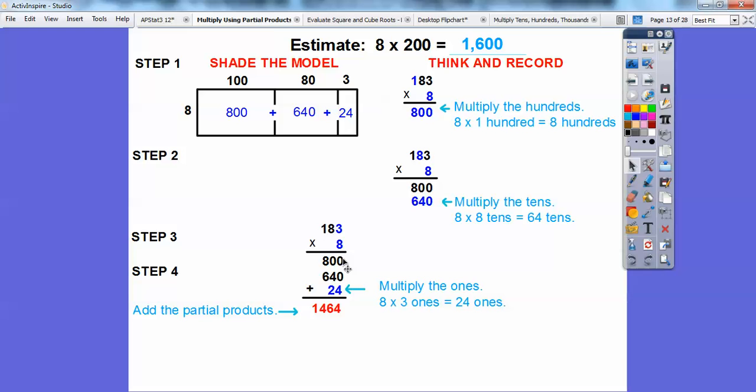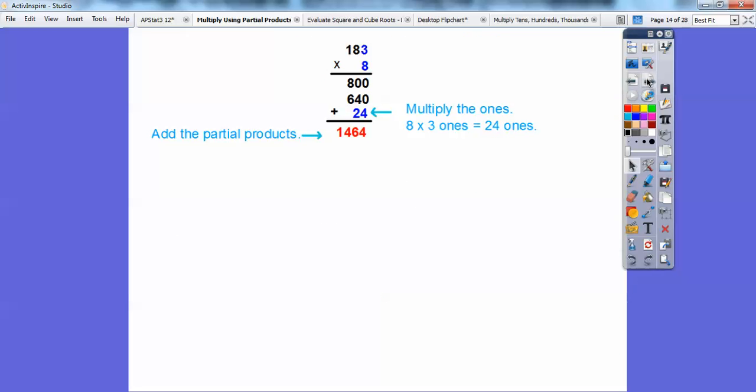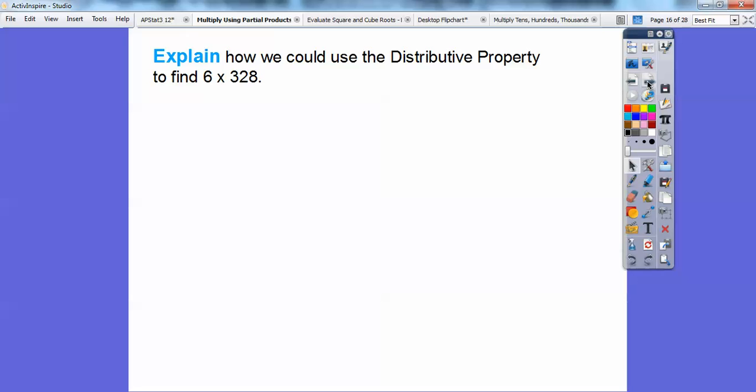800 plus 640 plus 24. 4 plus 0 plus 0, there's 4. 4 plus 2 is 6. And then finally, 8 plus 6 is 14, so 1,464. So 8 times 183 is 1,464. Remember, our estimate was 1,600, so we knew it was going to be a little bit less than that. And that seems like a reasonable answer because it is a little bit less than 1,600.